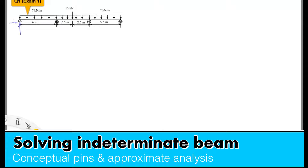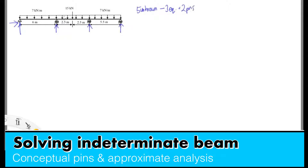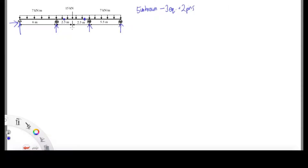First, you need to identify how many unknown reactions are in this independent beam. In this case we have 5 unknown reactions, and then you need to minus with 3 equilibrium equations, and you're going to get 2 pins that you need to locate.